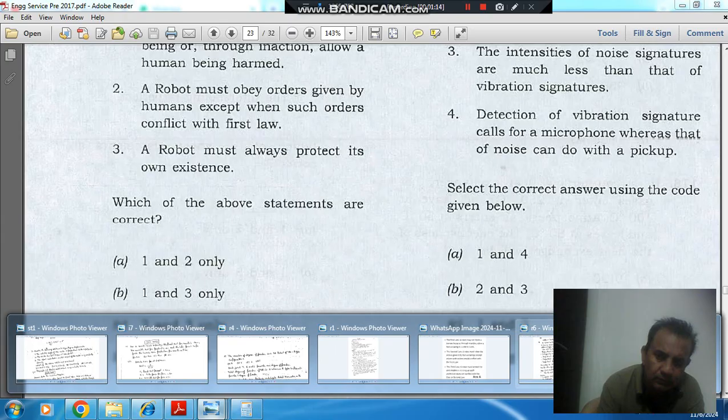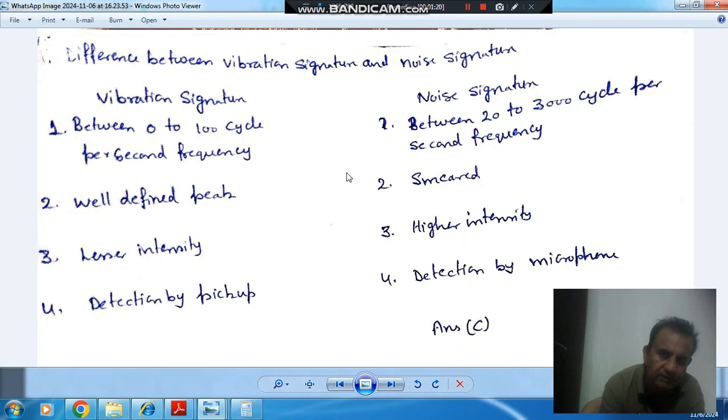Here, the differences between vibration signature and noise signature are: First difference is the frequency range is 0 to 100 cycles per second, and here it is 20 to 3000 cycles per second. It has well-defined peaks, whereas it is smeared, and it has lesser intensity.